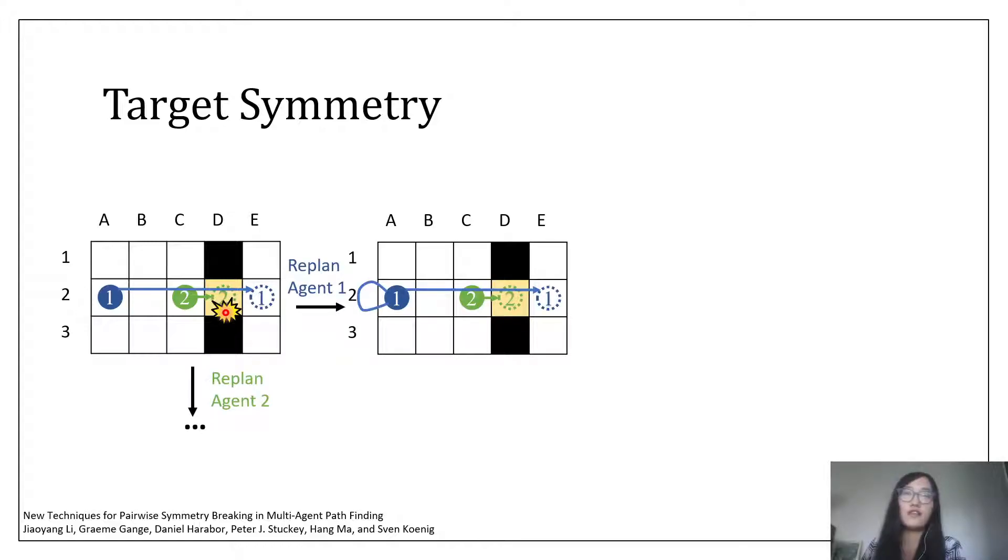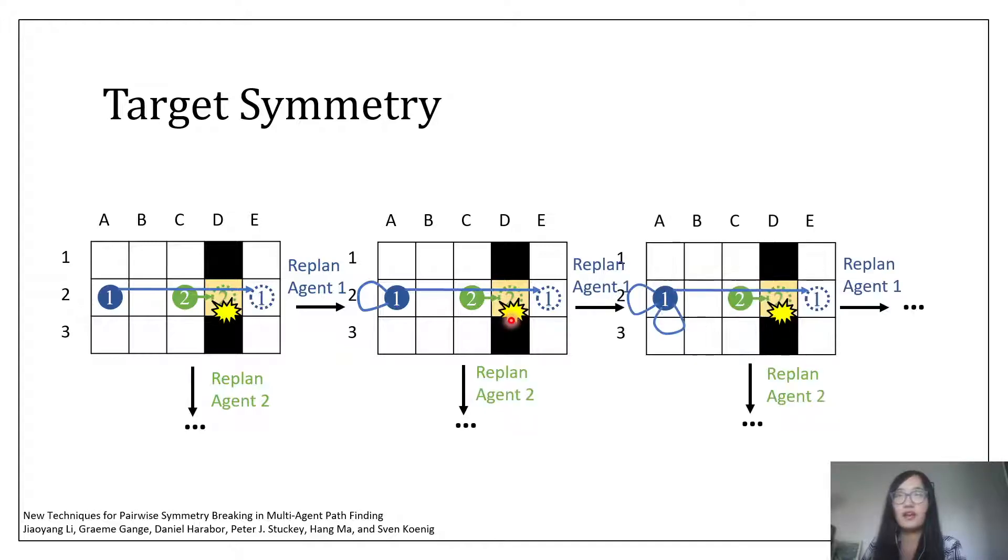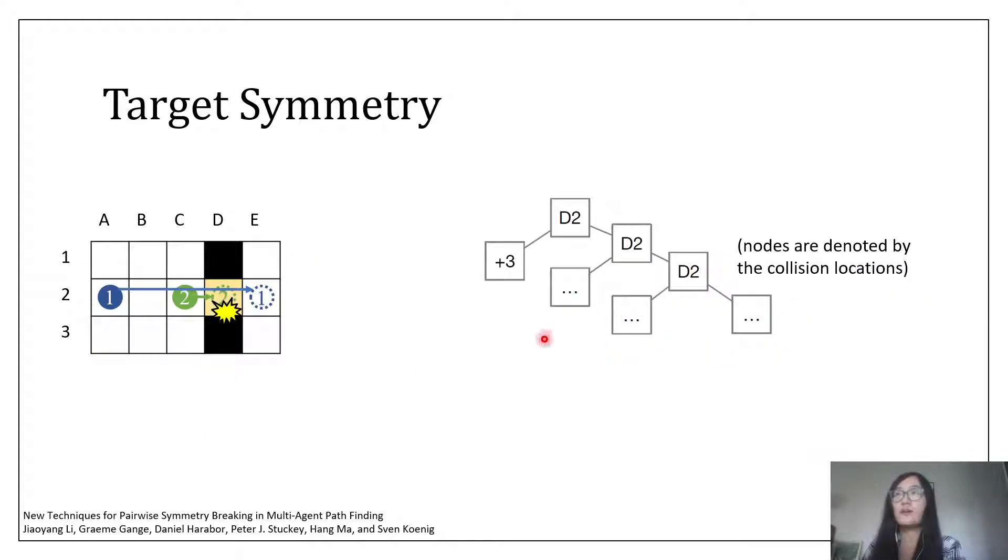If we use CBS to resolve it and replan for agent 1, then agent 1 will simply wait for one time step and collide with agent 2 again at time step 4. If we resolve the collision again, then it will wait for two time steps and collide with agent 2 at time step 5. This will be the tree generated by CBS eventually.